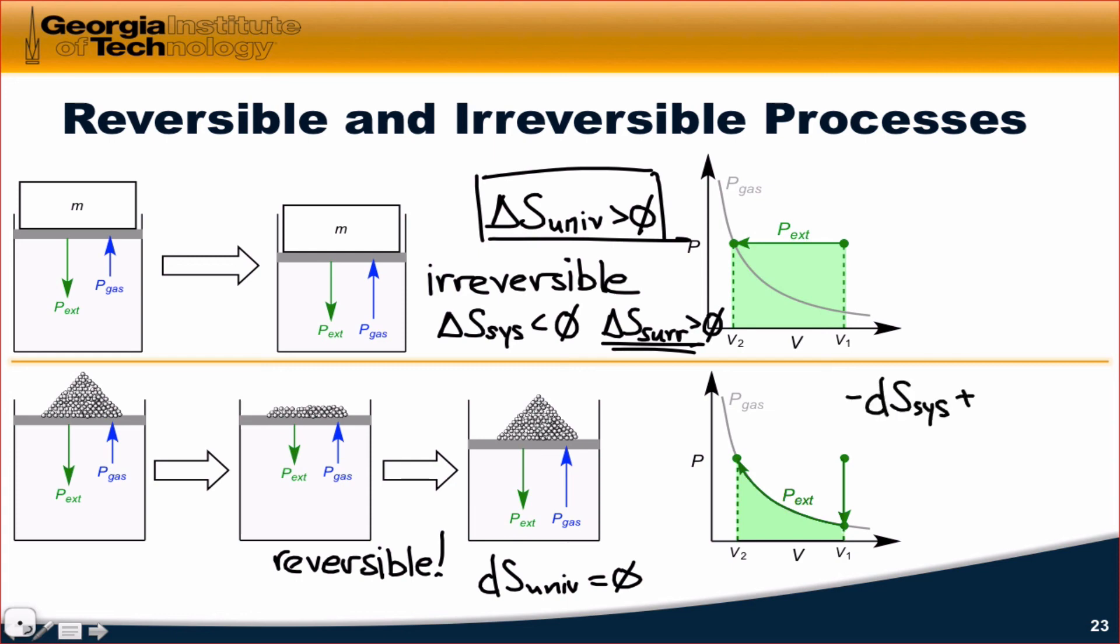However, that's exactly counterbalanced by an infinitesimal increase in the entropy of the surroundings. Remember, there's a little bit of heat del Q that's transferred out to the surroundings with the addition of each infinitesimally small grain of sand. That's associated with a positive entropy change dS of the surroundings and the sum of these two adds up to zero.